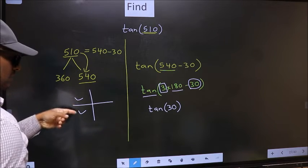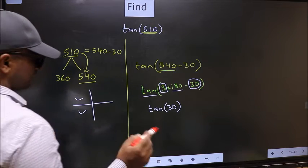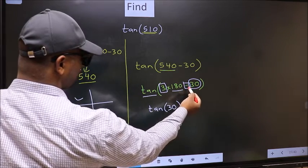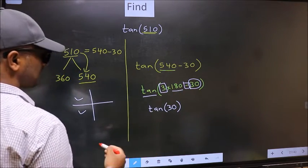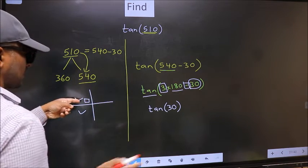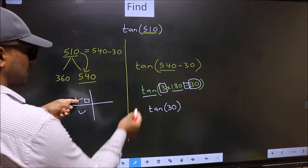So now to select the quadrant, we should look at this symbol. Here we have negative. That means the angle lies in the second quadrant.